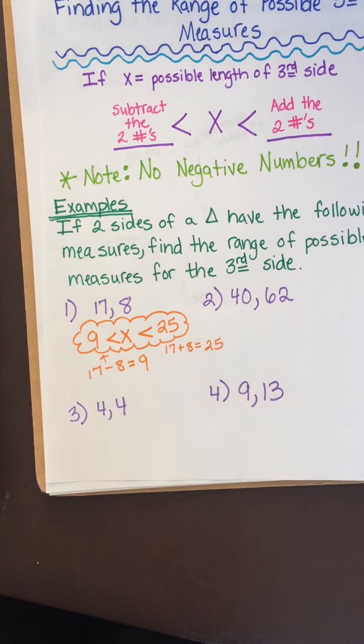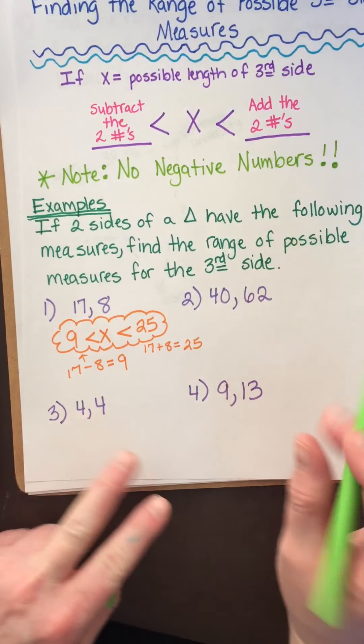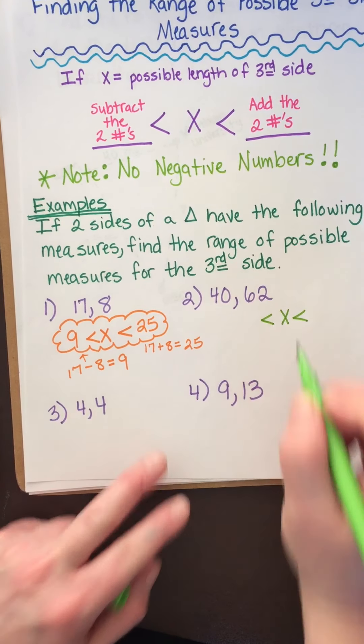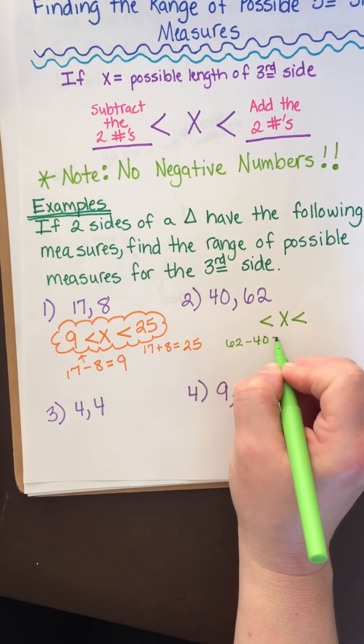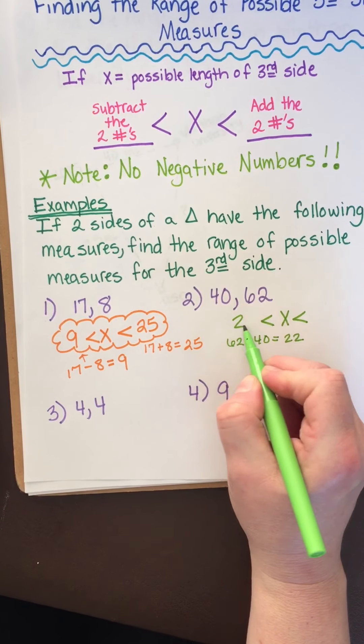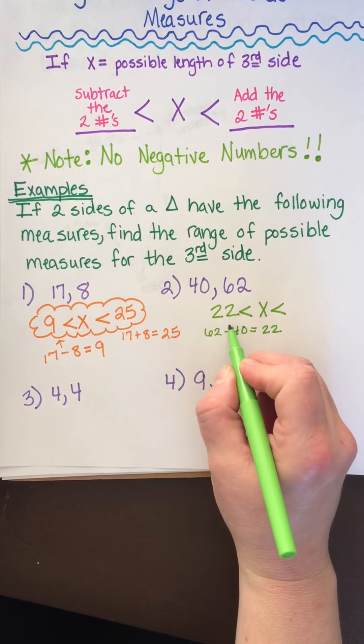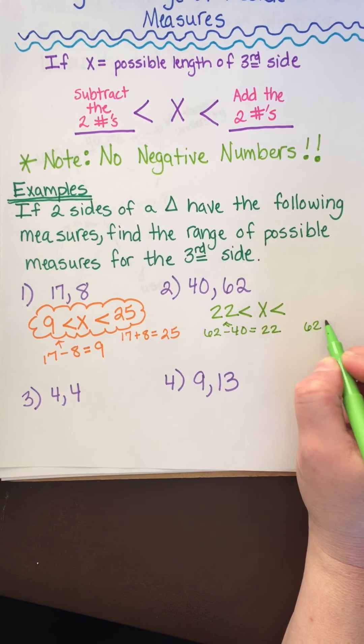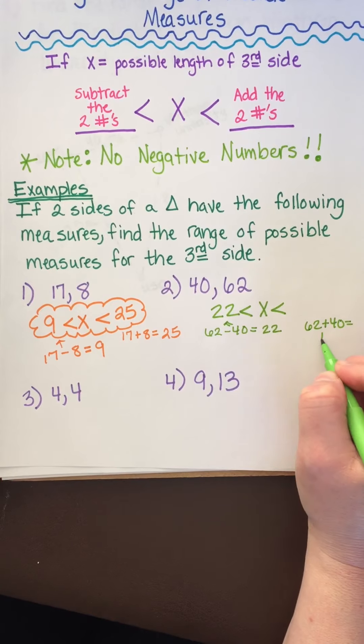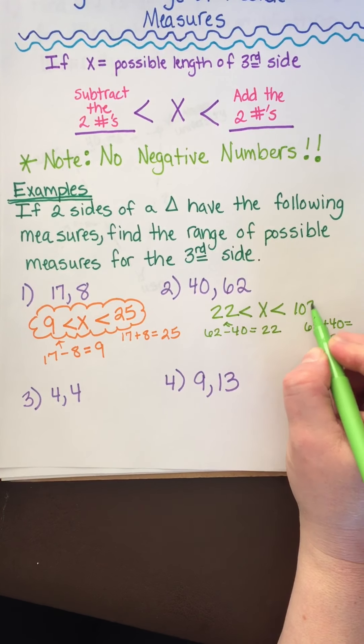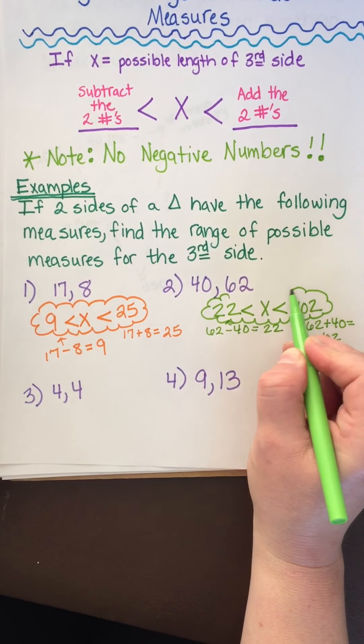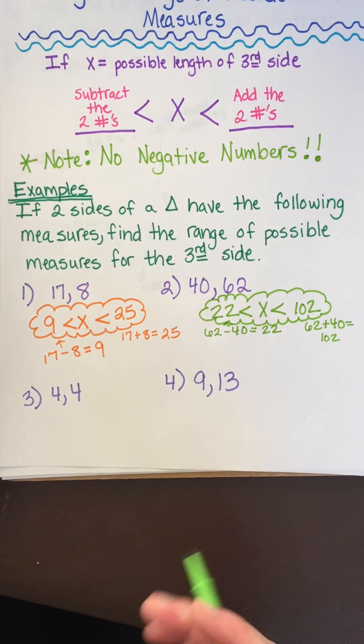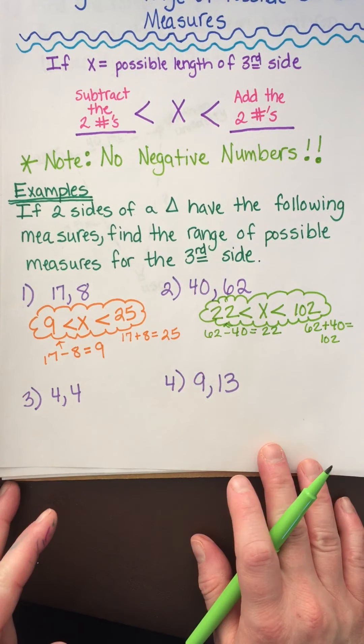All right, let's look at the next one. We have 40 and 62. I'm going to go ahead and draw that compound inequality. What do we do first? We're going to subtract them. So I'm going to say 62 minus 40, and that would be 22. And then I'm going to add them. So I'm going to say 62 plus 40, and that would be 102. And I'm done. That's my answer. The third side could be any number between 22 and 102, like 50 or 100.